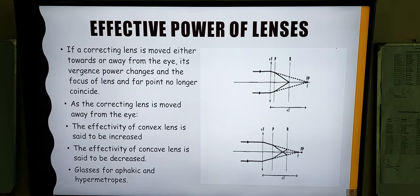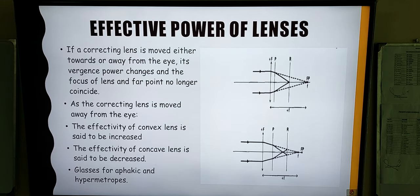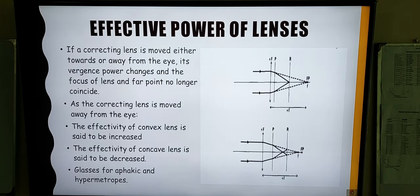When a lens, whether it is convex or concave, is moved away from the eye, the image is displaced forwards. The vergence power of the eye also changes and the focus of the lens no longer coincides with the far point of the eye. As the correcting lens is moved, the effectivity of the convex lens is said to be increased, whereas the effectivity of the concave lens is said to be decreased.